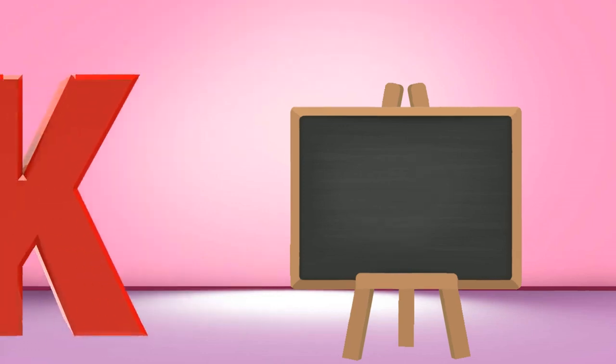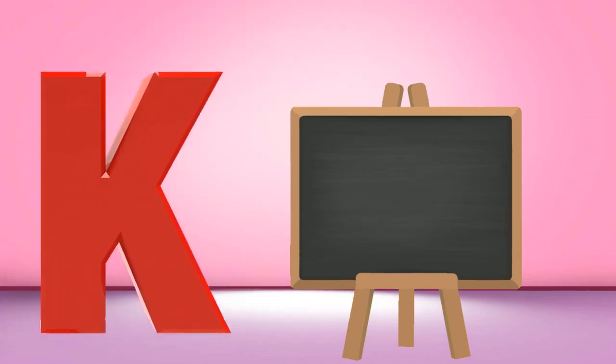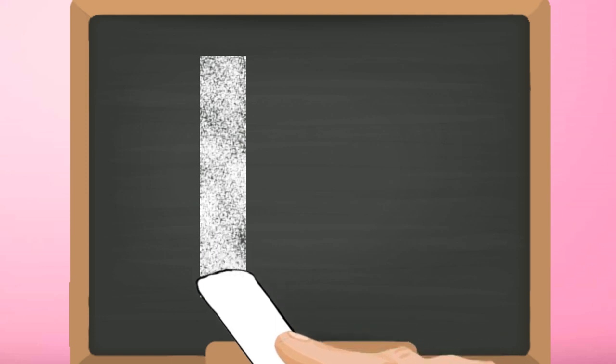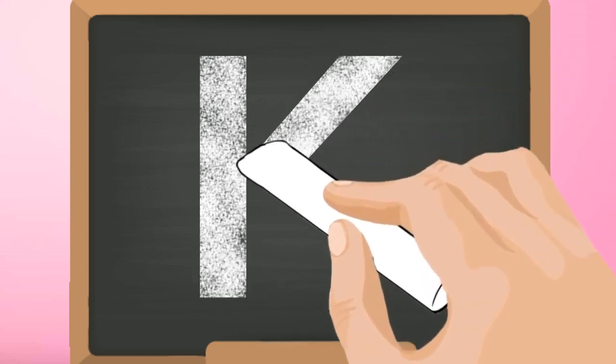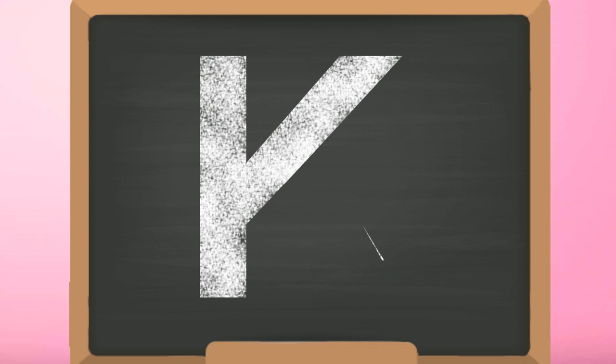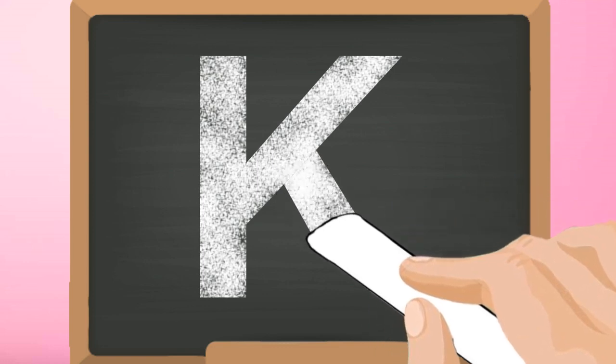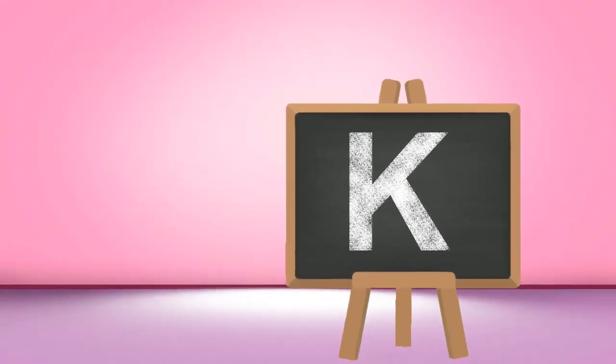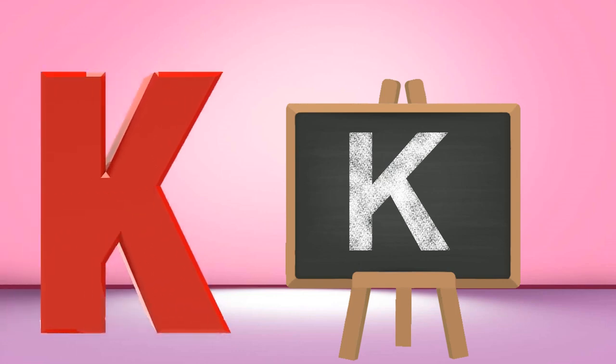K, capital K. Start from the top and draw a standing line down. Go back to the top and make a downwards slanting line to the left. Then make a downwards slanting line to the right till the bottom. Capital K.